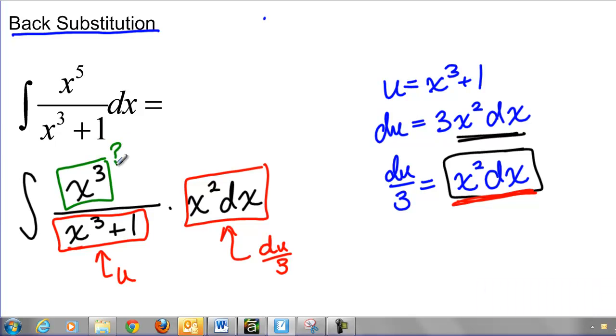Well, I need some way to turn that into u's. The only thing I have to use is I have my original equation, u equals x cubed plus 1, or I have my du equation. But I can't use my du equation because it has a dx in it. I've already used the dx. So I have to use this u equals x cubed plus 1.